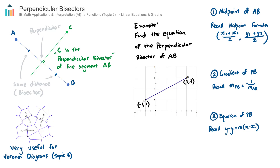Often in IB exam questions, you'll be asked to find the equation of this green line — for example, find the equation of the perpendicular bisector between points A and B. This is also very useful for Voronoi diagrams because we use perpendicular bisectors to construct them. Consider these two points X3 and X4: we create a Voronoi diagram by drawing the perpendicular bisector between those two points, which is line CD. This whole diagram is created by a series of perpendicular bisectors.